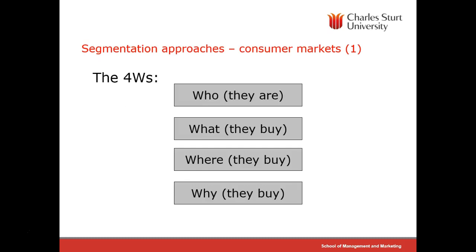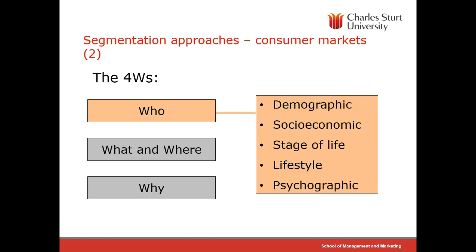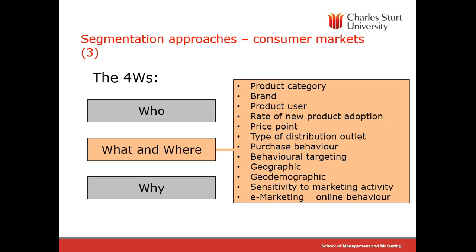The text talks about the four W's. The first is who is the market — remembering that you are not the market. We can classify the market in terms of demographics, social economics, stage of life, life cycle — do they have children, are they retired — and lifestyle and psychographics. The what and where looks at how people are making decisions: the brands they're using, types of users, whether they are heavy users, what they're using products for, the type of distribution outlet, whether they're buying online or in a retail store, and behavioral targeting such as whether they have received coupons.